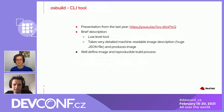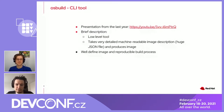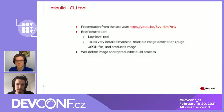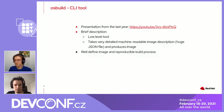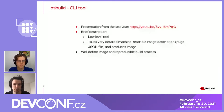OS Build Composer itself is based on a tool which we call OS Build. We presented it last year at DevConf. OS Build is a very low-level tool. It takes a very detailed machine-readable image description, which is just a huge JSON file, and it produces an image. What makes it different from other tools is that we want the image to be well-defined, and we especially want the image build process to be reproducible.